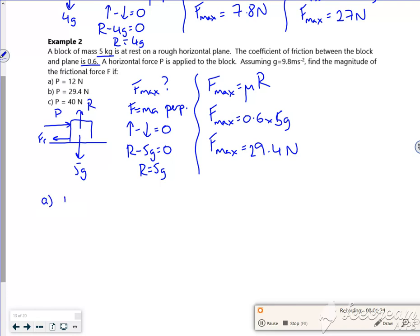So if you look, for A, if P is 12 newtons, then P is less than 29.4 newtons. It's stationary, it's not going anywhere, there's no chance of it at all.